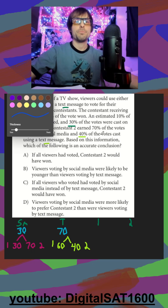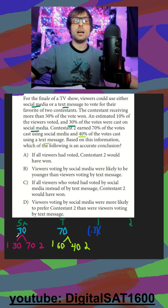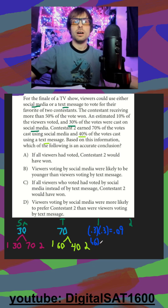Now to do our math. Over to the right, we're going to start to organize this. For contestant 1, they got 30% of the 30% of social media votes, so that's going to get us 9%. They also got 60% of the 70% of the text message votes, so that gets us 42%.